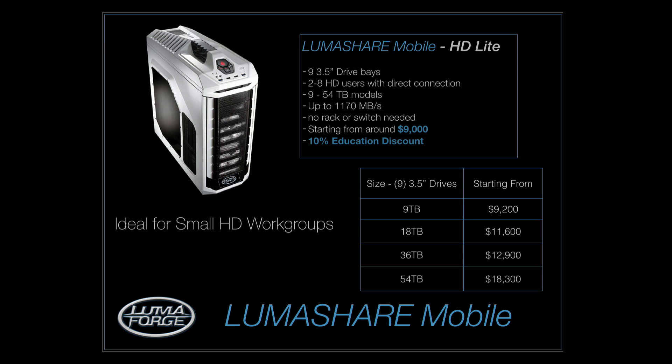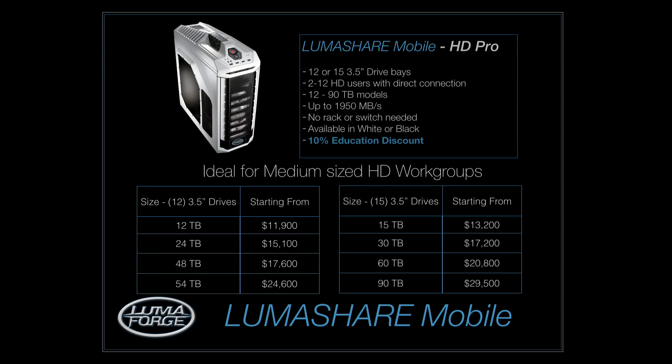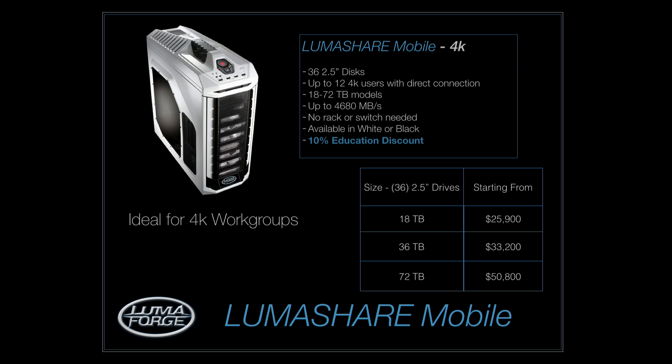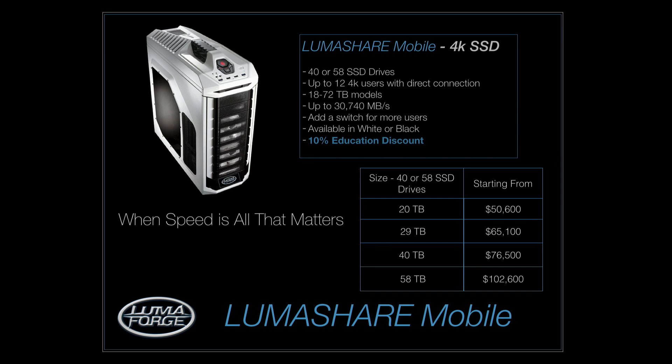We have a few different models. This is the HD Light model for small workgroups - it's 9 3.5-inch bays and prices start from about $9,000. This is scalable; we also have a 12 and 15 bay version that's not radically more expensive - you can get up to 90 terabytes for under $30,000. From there we go into the 4K models, which can do the things I was just showing, and those start from about $25,000, scalable up to 72 terabytes. And if you really need to go fast, we have SSD versions where we can fit 58 SSDs into that box - and it's still just as quiet.